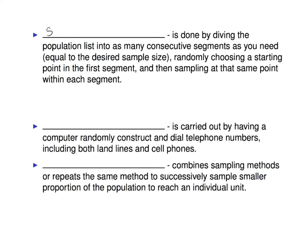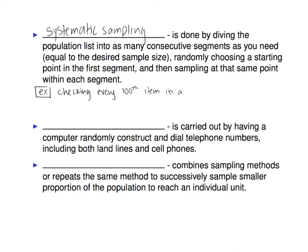Systematic sampling is done by dividing the population list into as many consecutive segments as your sample size requires, then randomly choosing a starting point in the first segment and sampling at that point within each segment. This is really commonly applied to checking products on an assembly line — for example, checking every 100th item.